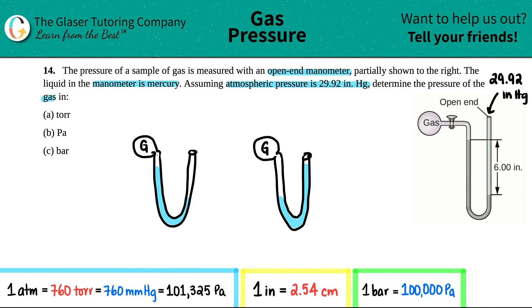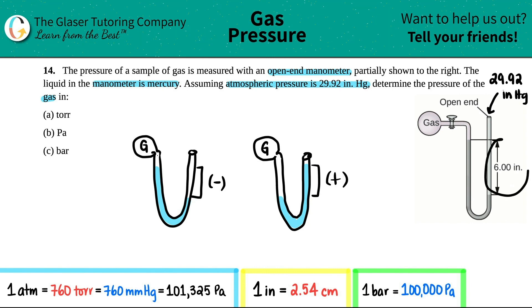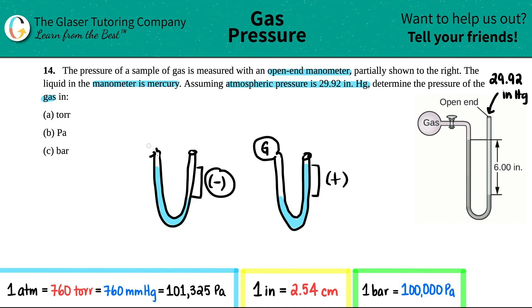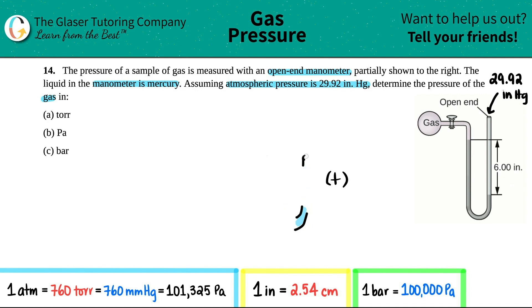When the higher end is pointing toward the gas, I like to think of it as going away from the atmosphere. The lower side is the one interfacing with the atmosphere — lower means subtraction. If the higher end were interfering with the atmosphere, that would be addition. So in our case, the difference of 6.00 inches is going to be subtracted from the atmospheric pressure.